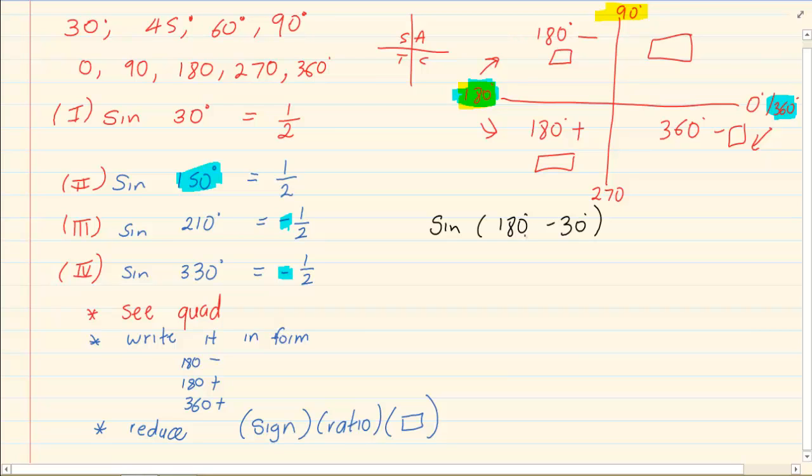I still have my sin, but instead of 150, I am going to have 180 minus 30. Now why? Because 180 minus 30 still gives me 150. So I see which quadrant and I wrote it in the form. I wrote it as 180 minus 30. Now I am going to reduce. Sin in the second quadrant is positive. Then I am going to put my ratio, the exact same ratio I was using. I am going to put it down. Sin.